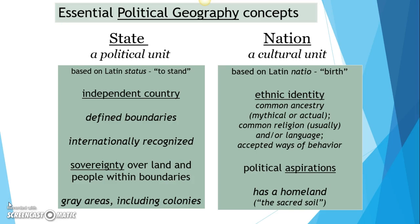Nations, on the other hand, are cultural beings. Nations are generally based around ethnic identity. When we talk about ethnic identity, we're talking about some kind of common ancestry — either mythical or actual. Typically there's some kind of common religion and/or language, not always, but most often. And there are definitely accepted ways of behavior. That in-group, out-group dynamic is very key to ethnic identity.